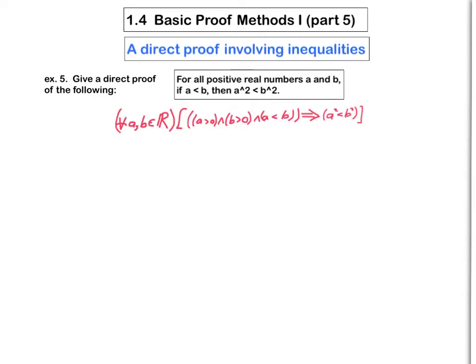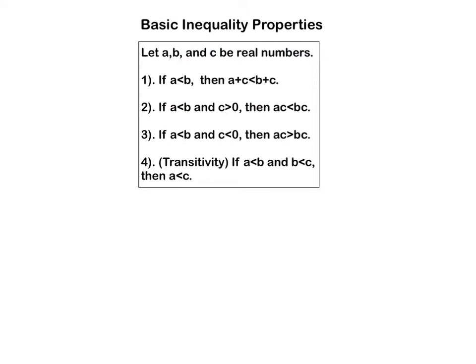Before we talk about how to prove this proposition, let's note down some of the basic tools we can use when dealing with inequalities. These are the properties you should be aware of — they each begin with the inequality A less than B. The first three of them say what happens to that inequality when various arithmetic operations are performed on it. The first one says that if you add a real number C to both sides of the inequality, the inequality is preserved, regardless of what C is.